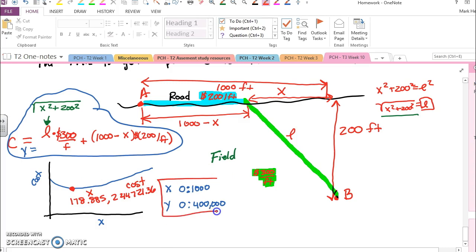Using my table, I set up a window from 0 to 1,000 in the x and 0 to 400,000 in the y.